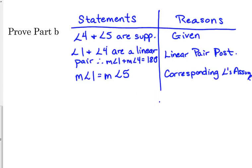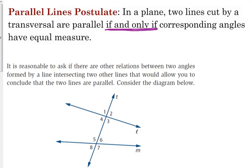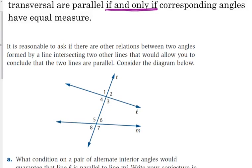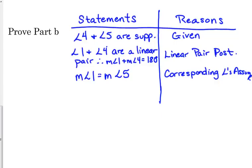Because if we have corresponding angles with equal measure, then we have parallel lines. Angles 1 and 5 are corresponding angles. What did our parallel lines postulate say? Corresponding angles have equal measure. So by the parallel lines postulate, lines L and M are parallel. I think I'm missing a step — I need to put something else in there.